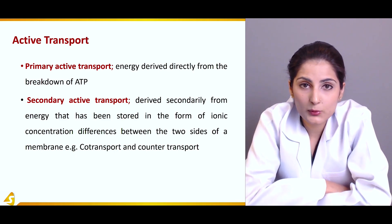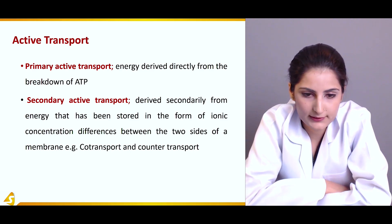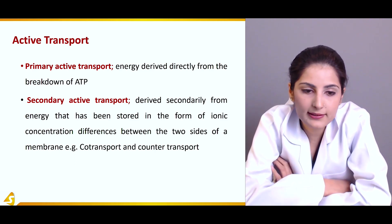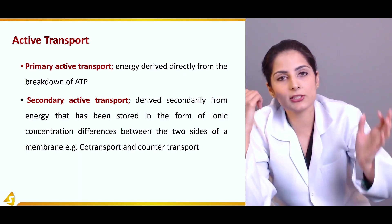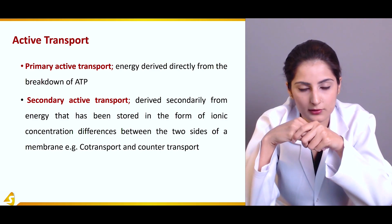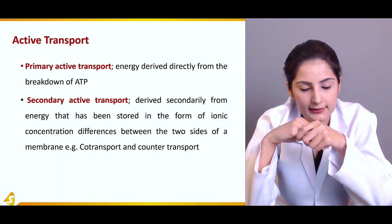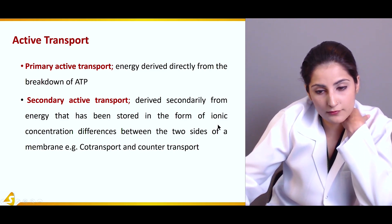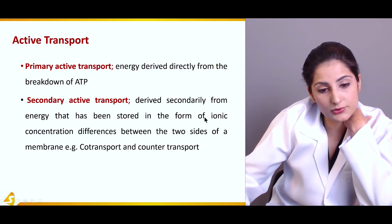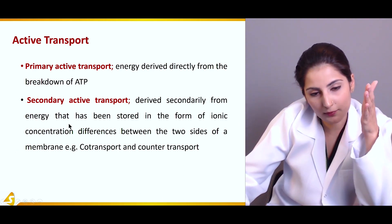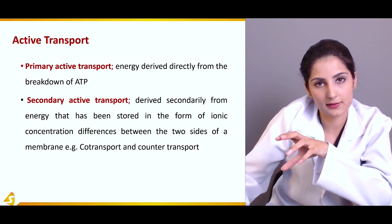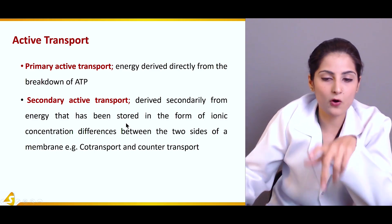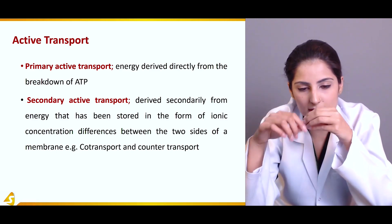Active transport is further divided into two subtypes: primary active transport and secondary active transport. In primary active transport, the energy is derived directly from the breakdown of ATP. In secondary active transport, the energy is derived secondarily from energy stored in the form of ionic concentration differences between the two sides of a membrane — not coming directly from ATP at that moment, but from concentration gradients already stored across the two membranes.